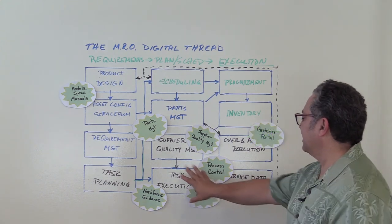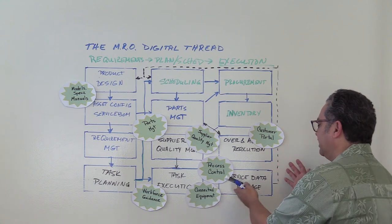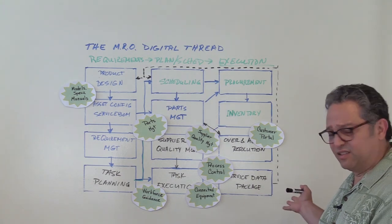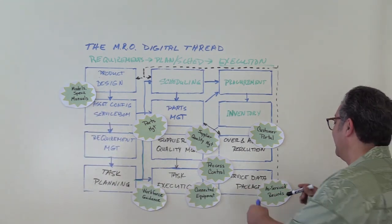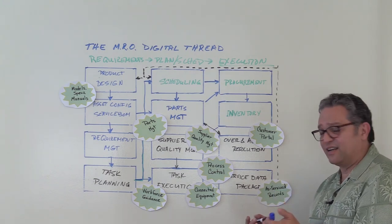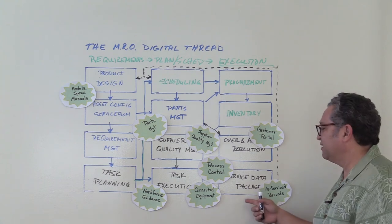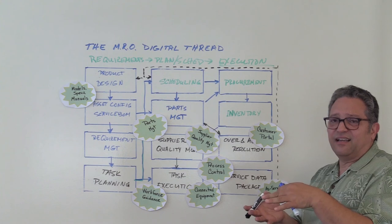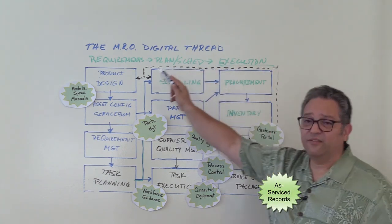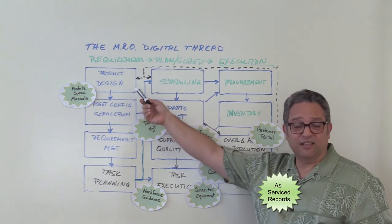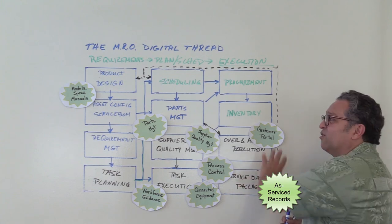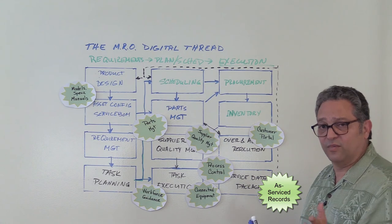At the end of the whole process, all the maintenance execution data is captured into a service data package, which produces the service records delivered along with the product as a digital image and digital data. That maintenance data travels with the product in the digital thread and provides feedback to scheduling and even product design — improving future maintenance predictions.